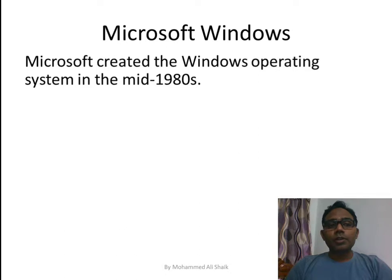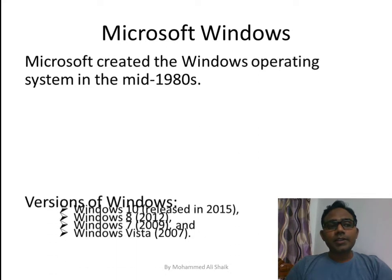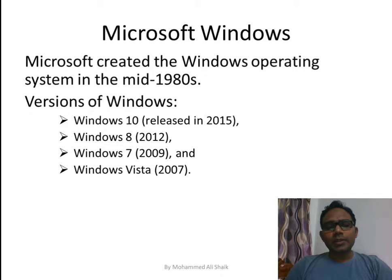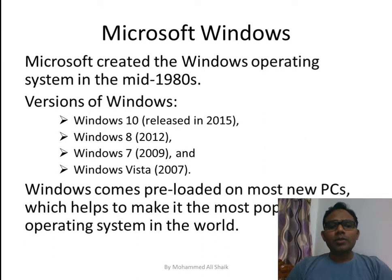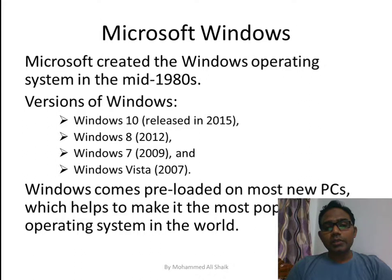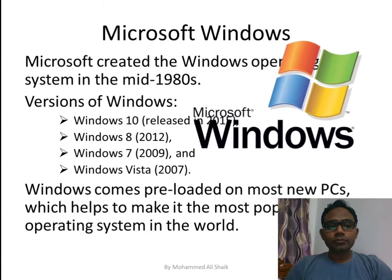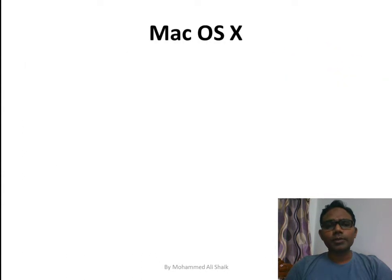Microsoft Windows was created in the mid-1980s. Many versions exist, including Windows 10, 8, 7, Vista, XP, 95, and 98. Windows comes pre-loaded on most new PCs, making it the most popular operating system in the world. It is a user-friendly graphical user interface operating system.